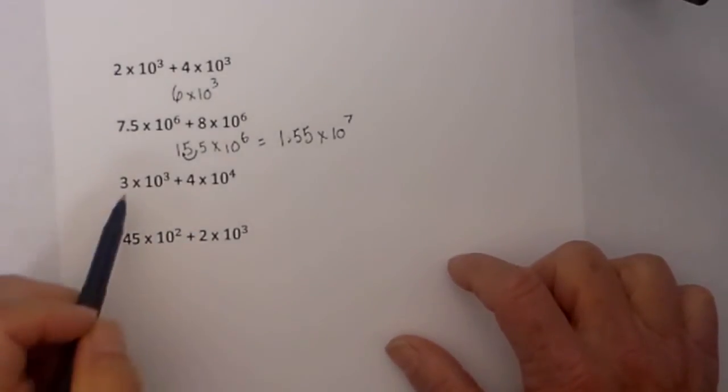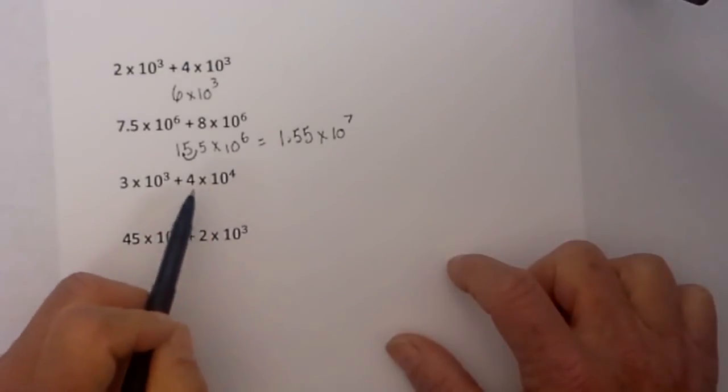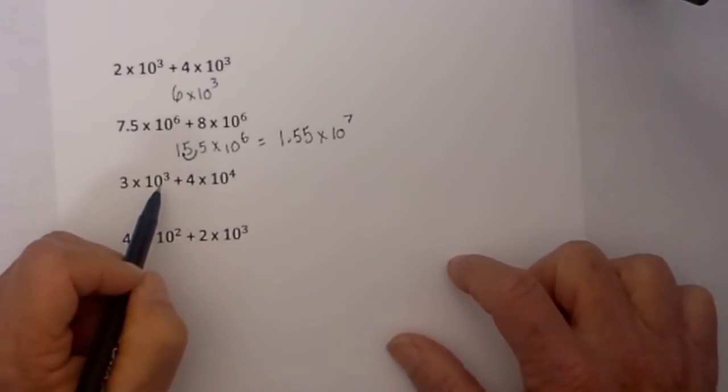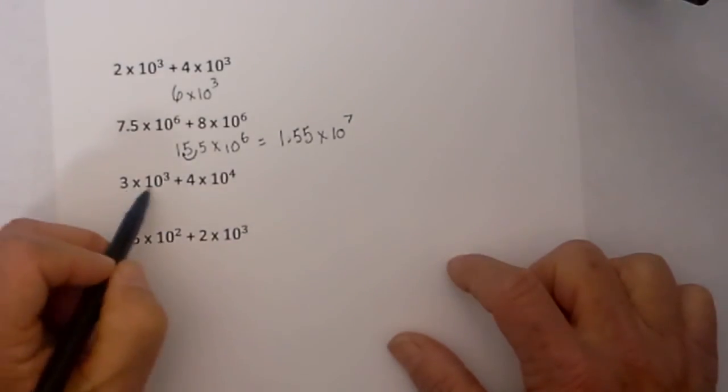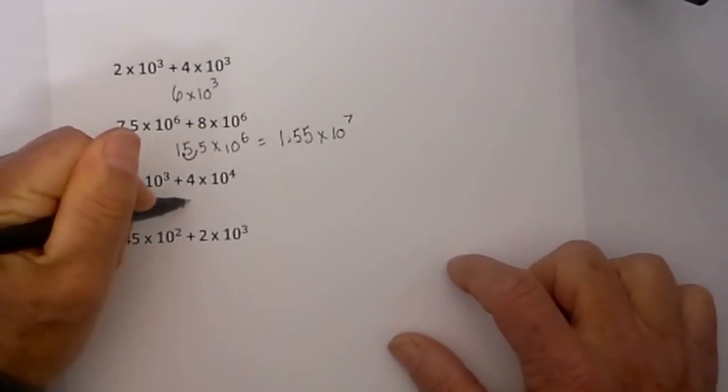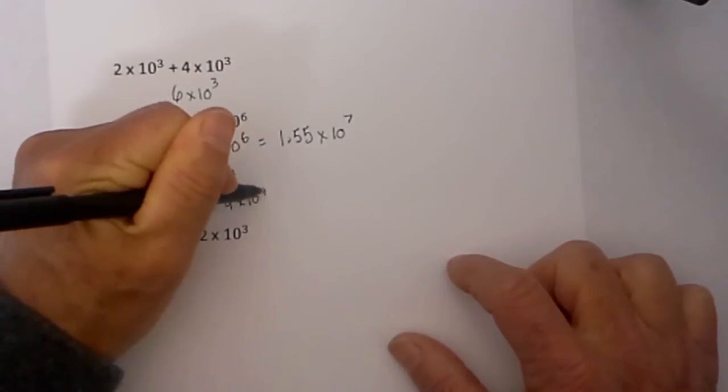Let's look at another example. We have 3 plus 4, the exponents are different. So before we add, we need to adjust now and I am going to adjust 10.3 and we will adjust it up. So in order to increase the exponent, the number will need to become smaller so I will need to move it 1 to the left so it will be 0.3 times 10 to the fourth plus 4 times 10 to the fourth.